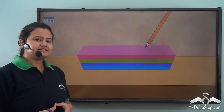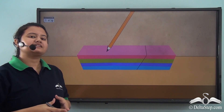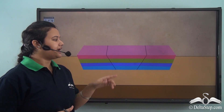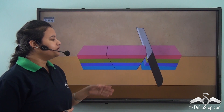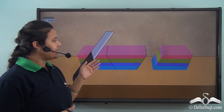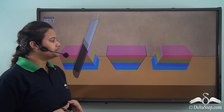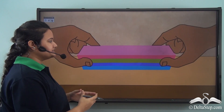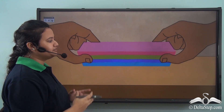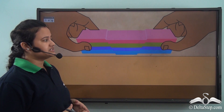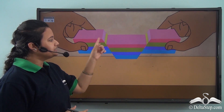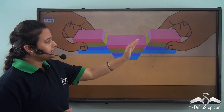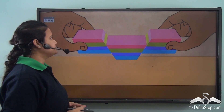In order to understand how mountains are formed, let us perform an activity. Take an eraser and mark lines on it. Now take a knife and cut or slice the eraser along the lines. Now press all the parts of the eraser and uplift it. You will find that the middle portion gets submerged while the outer blocks stand uplifted.